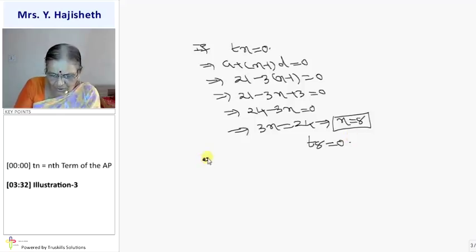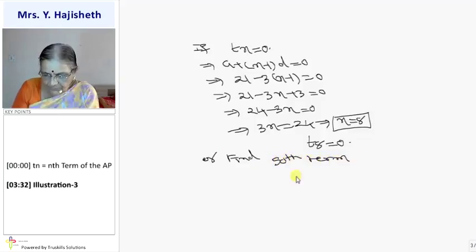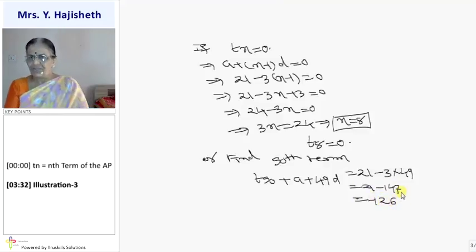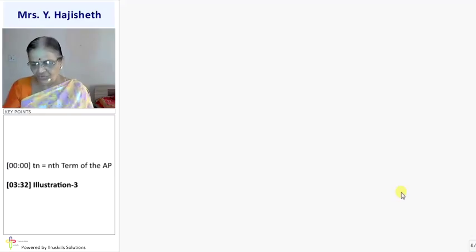Both types of questions can be asked. Or suppose you are asked to find the 50th term. To T50 kya aayega? A plus N minus 1 D. So A plus 49D. Now you put the values of A and D. So it is 21 minus 147. So my answer is minus 126. Aise bahut saare questions khud bana sakte ho, khud kar sakte ho. But you have to adjust the data.